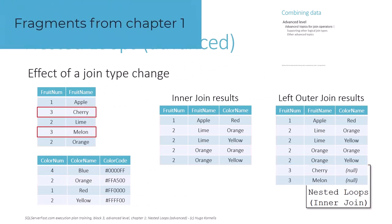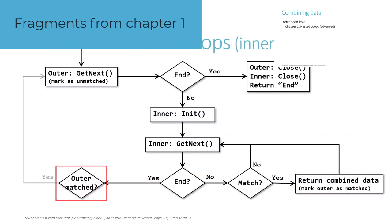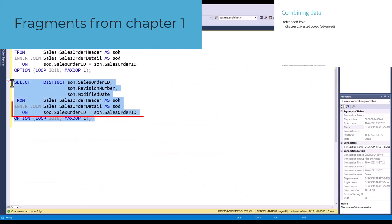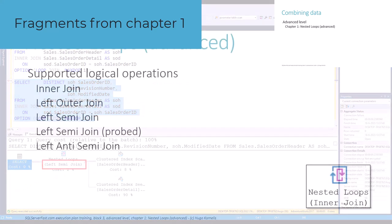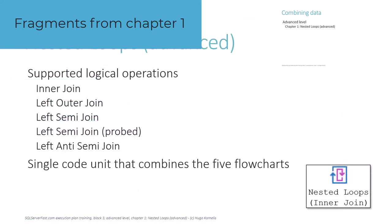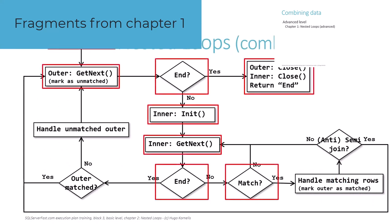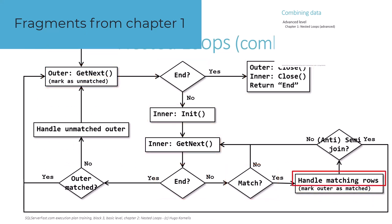In chapter 1 on nested loops, we look at how the results of a join must change as the join type changes, and then adapt the flowchart of the inner join to ensure that those different results are indeed returned. But the actual operator does not have separate logic for each join type. In the end, we combine the flowcharts for each individual join type into a single flowchart for all supported join types.